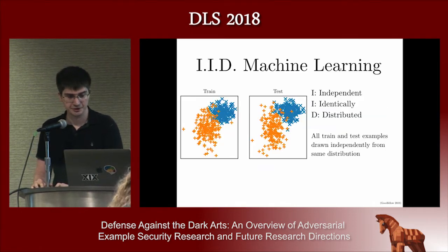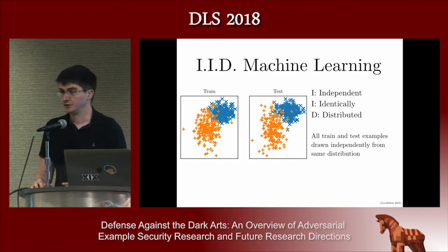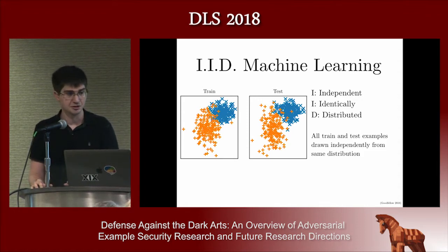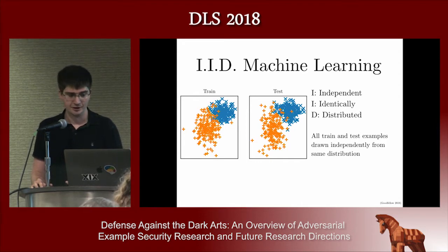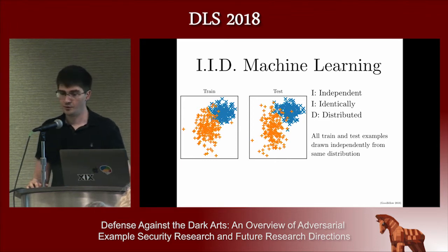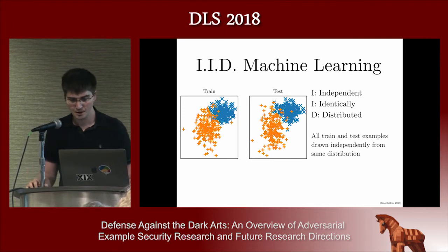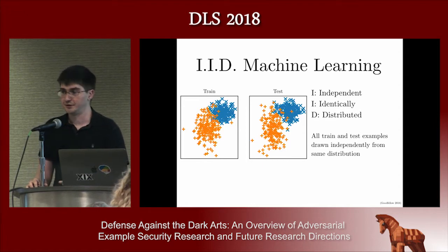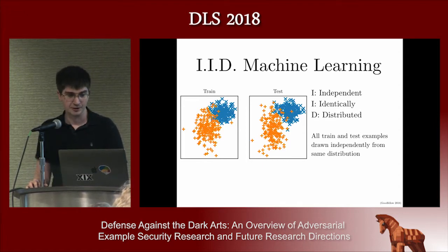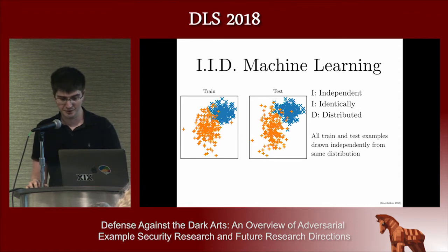If we think of adversarial examples in contrast to other kinds of machine learning research, the most important thing to understand is that, until recently, most machine learning algorithms were based on the IID assumptions. The first I stands for independent — each example is generated independently. The second I stands for identical — the train and test distributions are identical. You can see scatter plots where training and test examples from the same classes look very similar to each other.